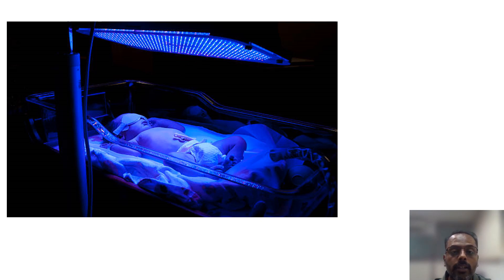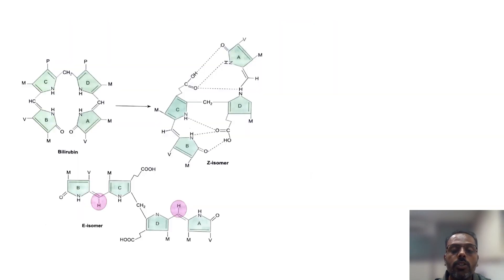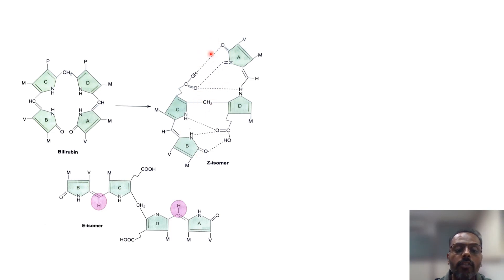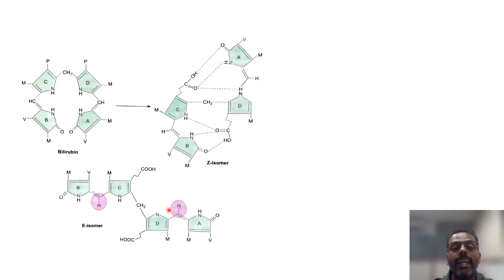In neonatal jaundice, bilirubin is present mainly in the Z-isomer form. This Z-isomer is mainly toxic and water insoluble, because it is present in a conformation that allows intramolecular bonding, favoring hydrophobic interaction. With the help of phototherapy, this Z-isomer is converted into the E-isomer. In the E-isomer there is no intramolecular bonding, so the water-insoluble form is converted into a water-soluble and excretable form.